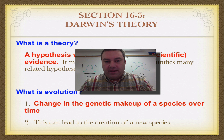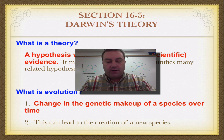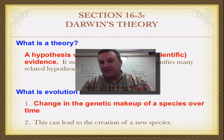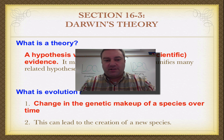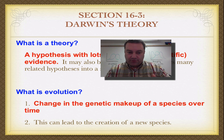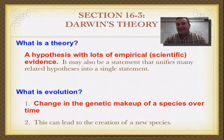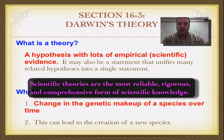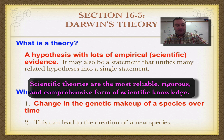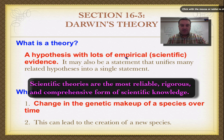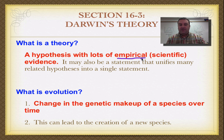Welcome to our third episode from Evolution 1. This is going to be part one of Darwin's theory. We're going to go over how he came towards his theory of natural selection. First, what is a theory? A theory is simply a hypothesis with lots of evidence — there's a lot of data to back it up.